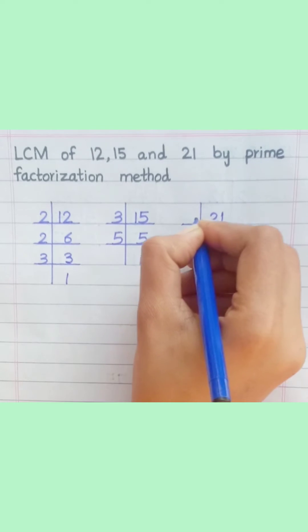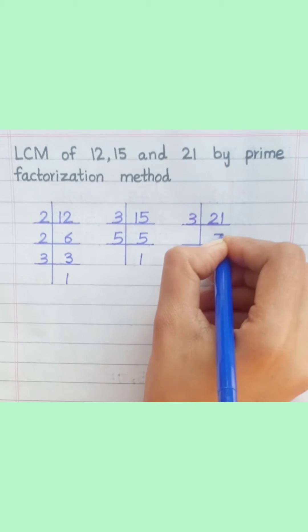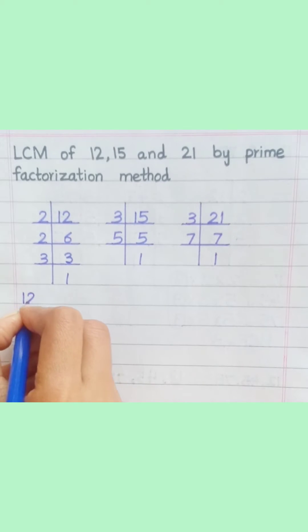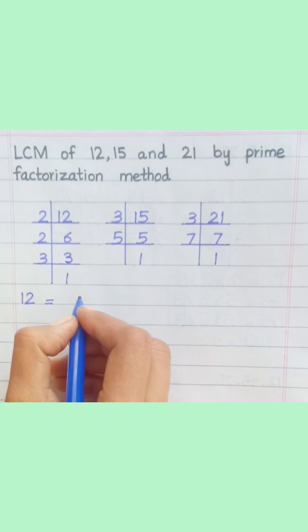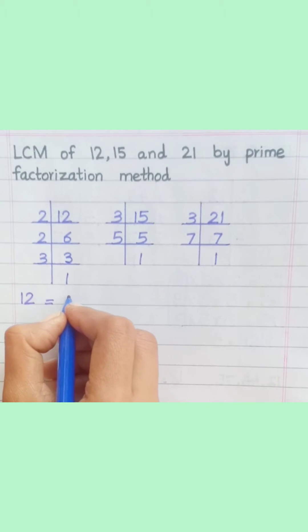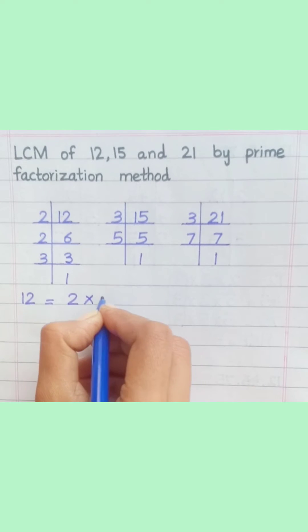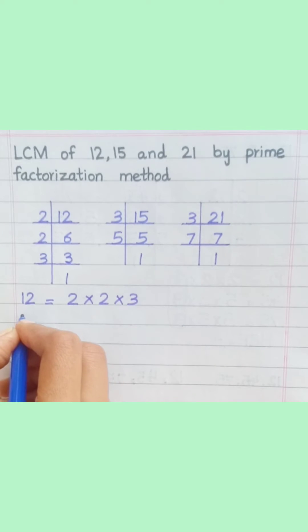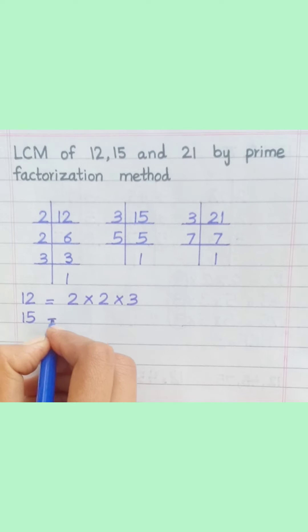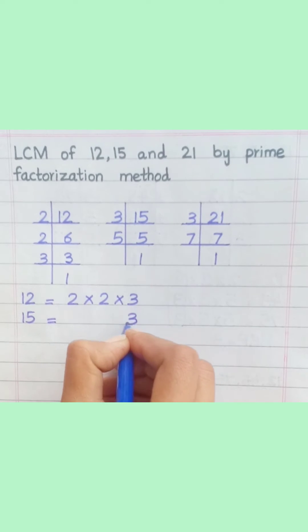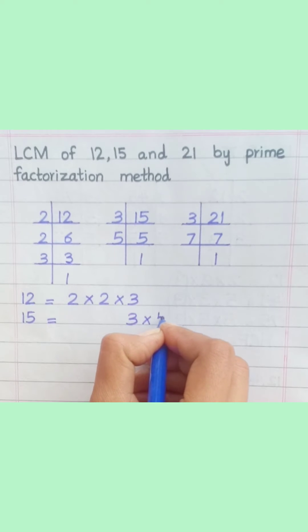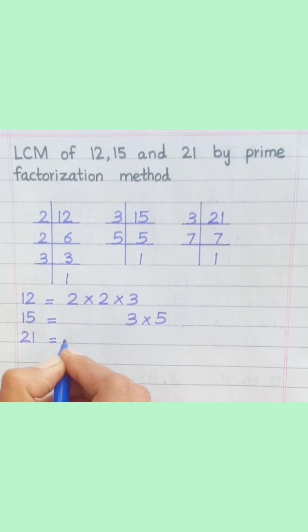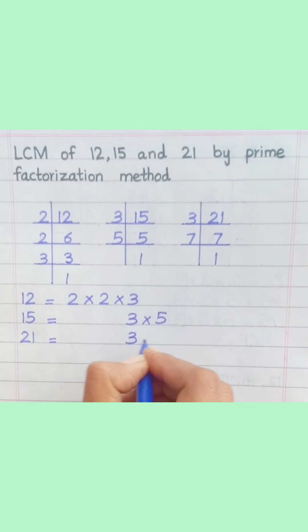21: 3 sevens are 21, 7 ones are 7. So 21 = 3 × 7. Writing the factorizations: 12 = 2 × 2 × 3, 15 = 3 × 5, 21 = 3 × 7.